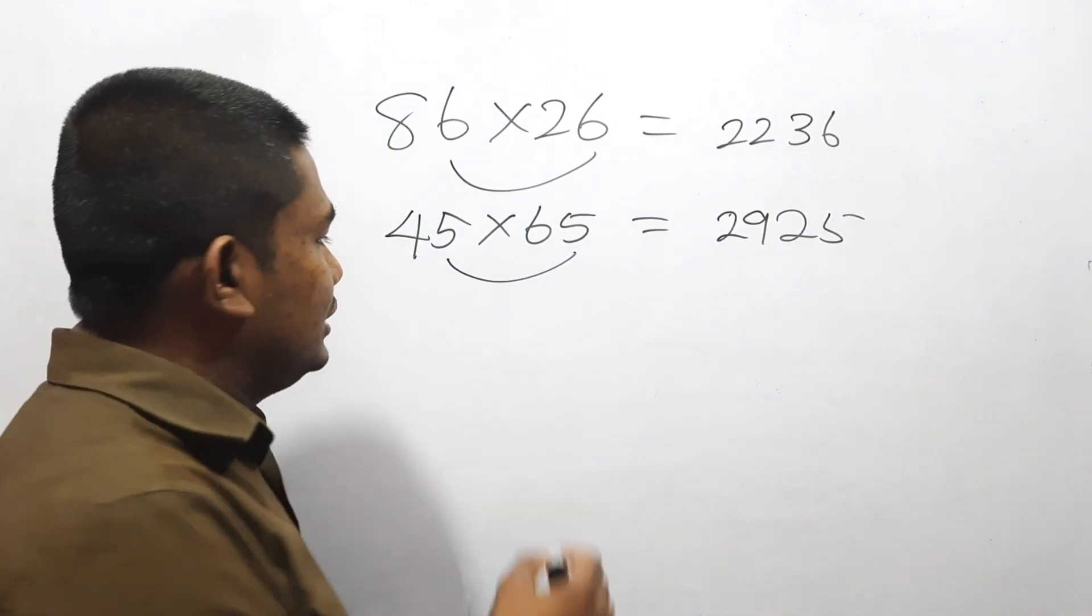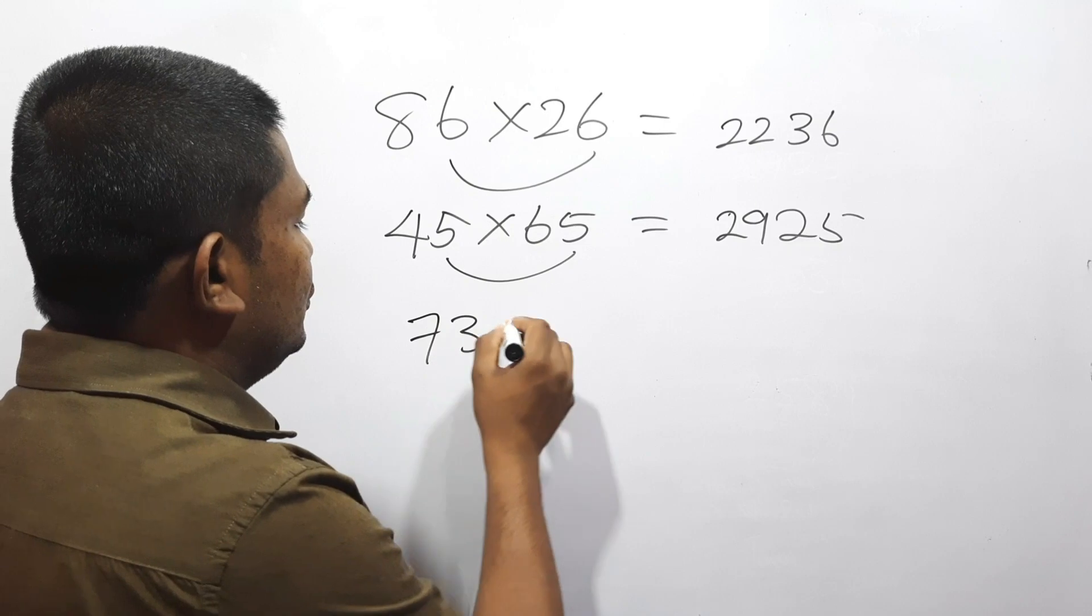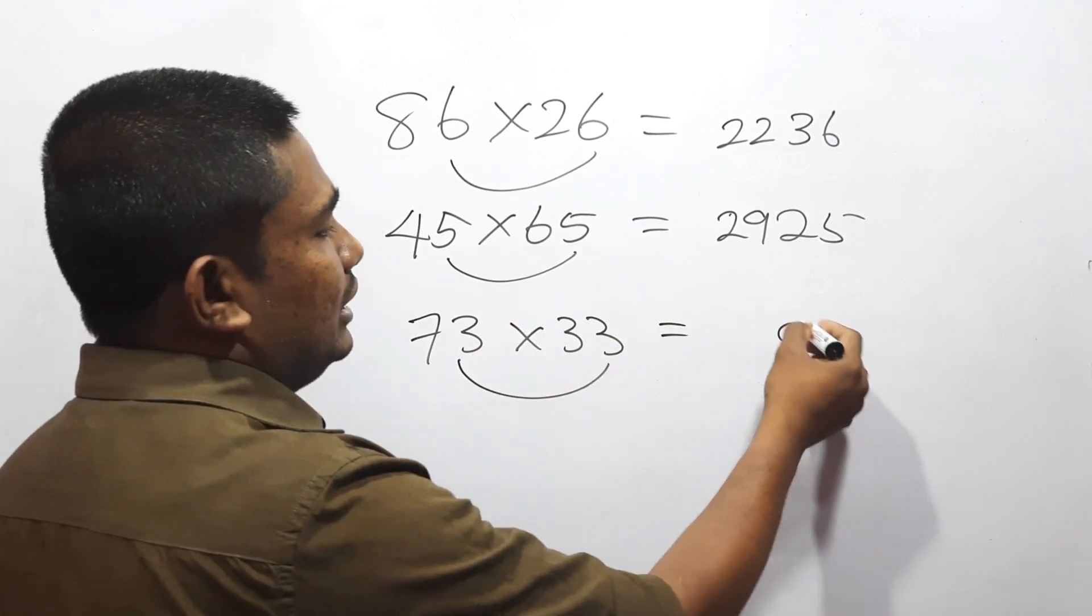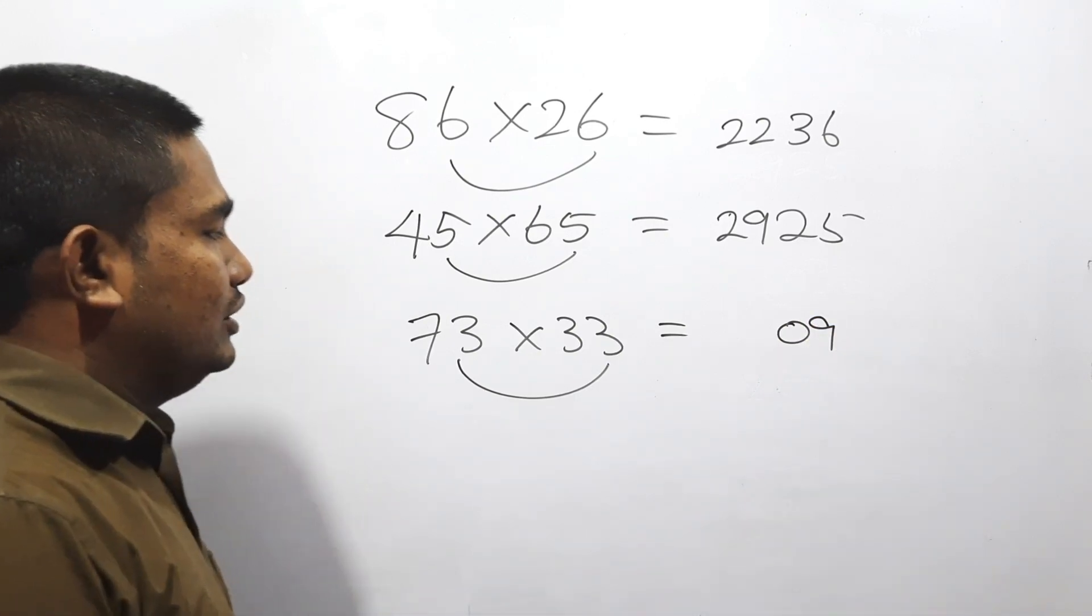Next one: 73 into 33. 3 into 3 is 9, so we write 09. 7 into 3 is 21, add 3 to get 24. The answer is 2409.